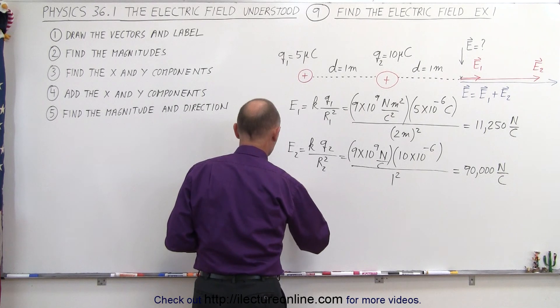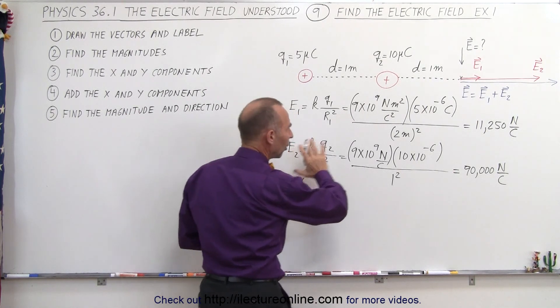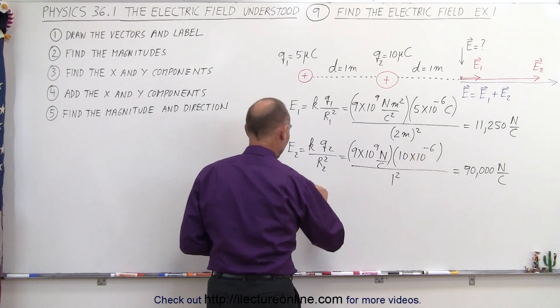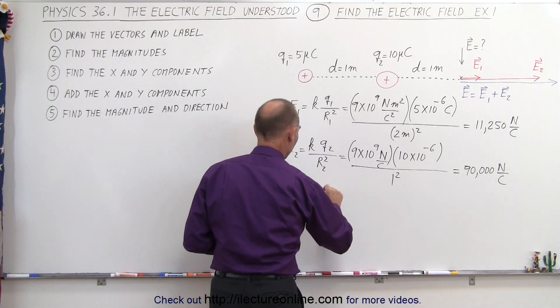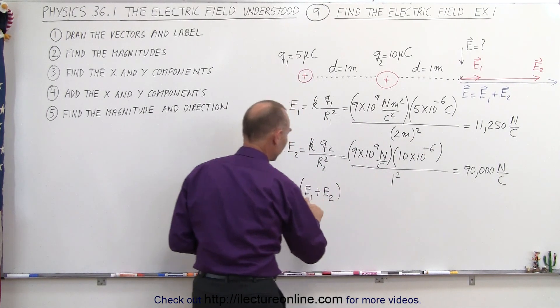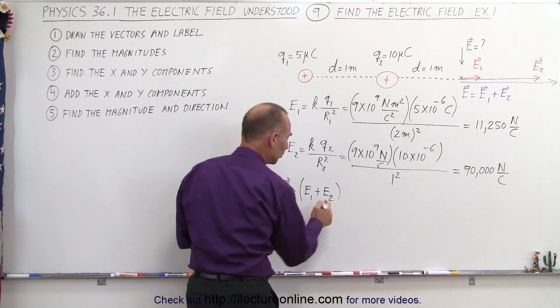So this means that E, the total electric field, is equal to, and since they're all x components I can simply say this is E1 plus E2. That's the magnitude of E1 plus the magnitude of E2, they're both pointing in the positive direction so they're positive.